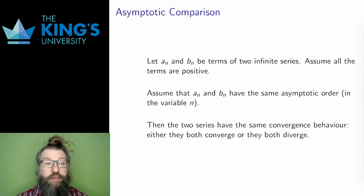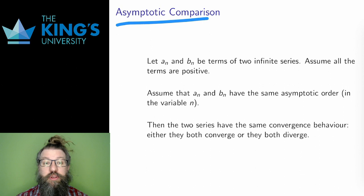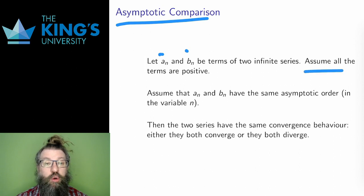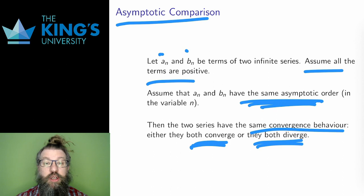This is asymptotic comparison. Instead of direct comparison, where I actually need to calculate a real inequality, asymptotic comparison just cares about asymptotic order. As with limits, working with asymptotic order means I can focus clearly on the important parts of the term, ignoring any details that don't contribute to the asymptotic order. If two series with positive terms, a_n and b_n, have the same asymptotic order, then they have the same convergence behavior — either they both converge, or they both diverge. Most comparisons will be to the geometric or zeta series.